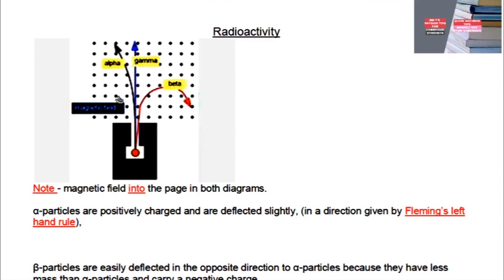Note that in the diagram, there should be crosses and not dots, since the magnetic field is directed into the page. The extent of deflection of beta particles is larger than that of alpha particles because beta particles have a smaller mass compared to alpha particles. Whenever you are asked to draw this, make sure the angle for beta particles is greater than the angle for alpha particles.